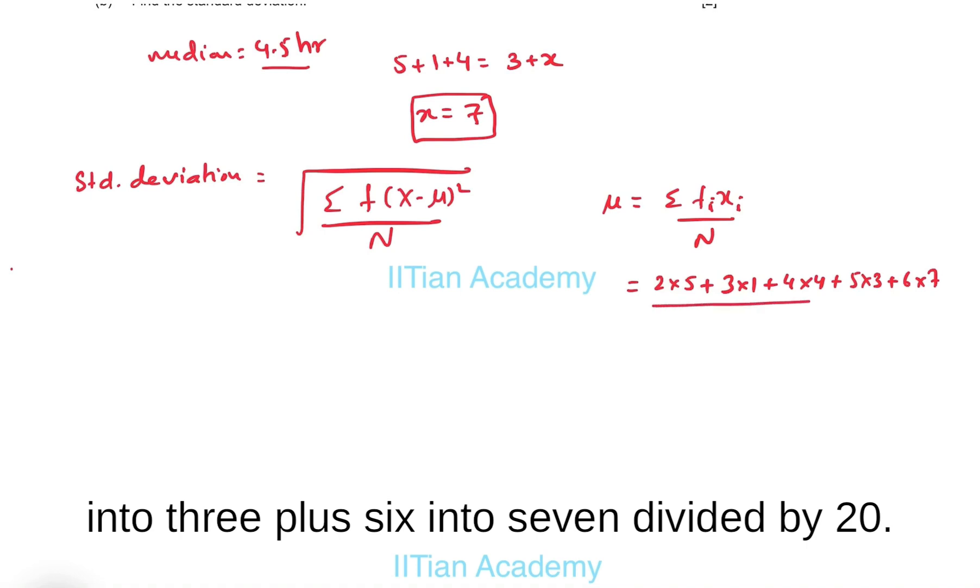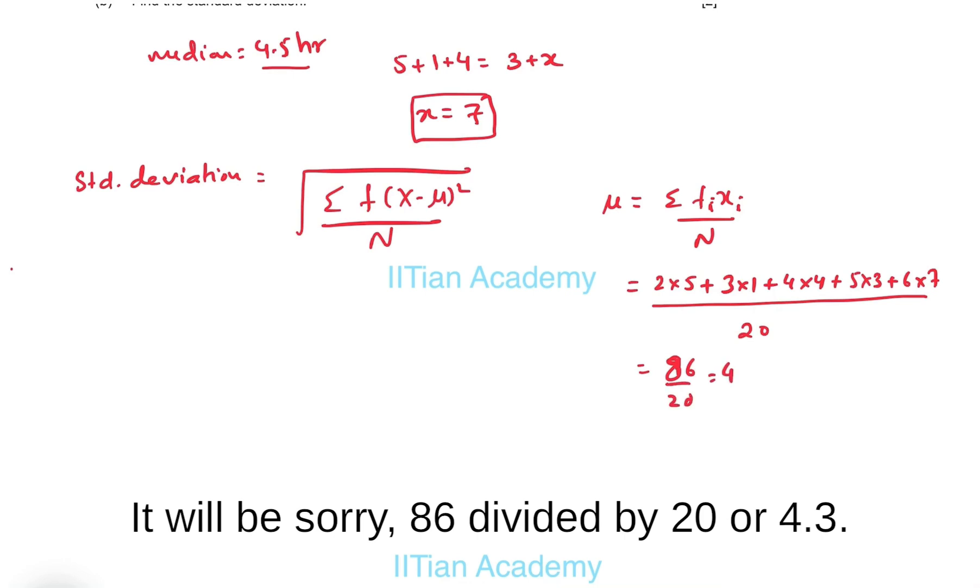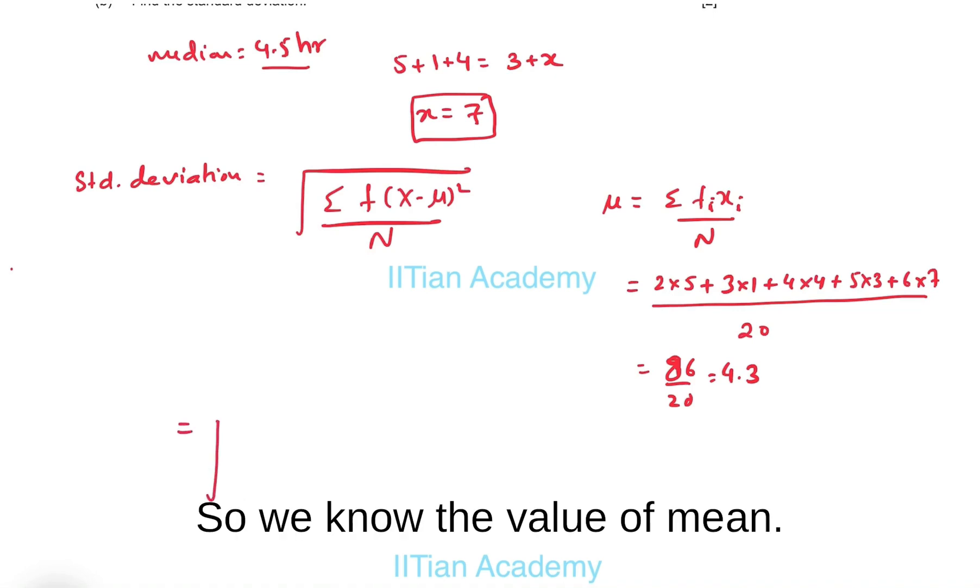...plus six into seven divided by twenty, which equals eighty-six divided by twenty or 4.3. So we know the value of mean.